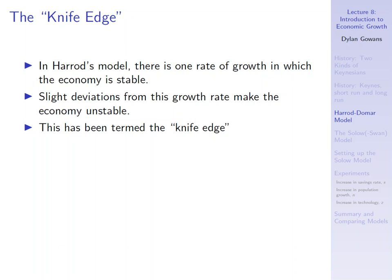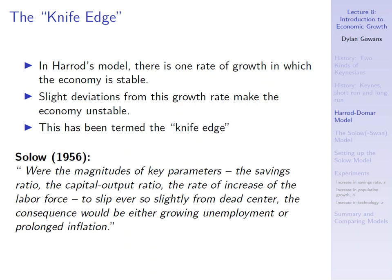And so we're finally getting to Solow here. This is kind of a problem for some of these people. Solow, in his 1956 article that we'll talk about soon, says: "Were the magnitudes of key parameters — for example, the savings ratio, the capital-output ratio, the rate of increase of the labor force — if they were to slip ever so slightly from dead center," ever so slightly from this knife edge, "then the consequence would be either growing unemployment or prolonged inflation." This is kind of what I've shown you with these two problems.